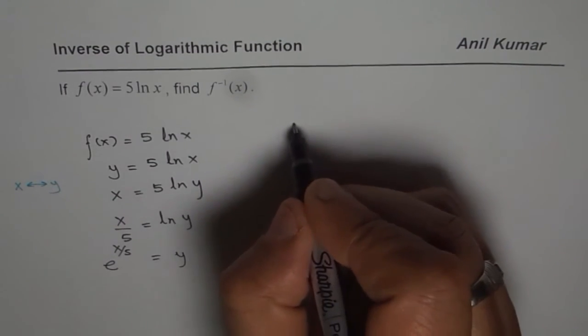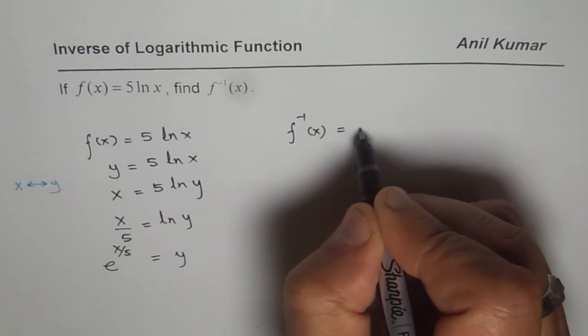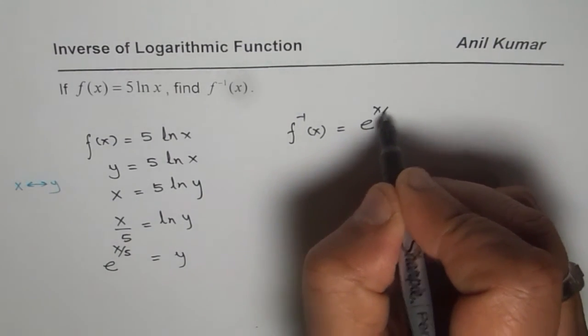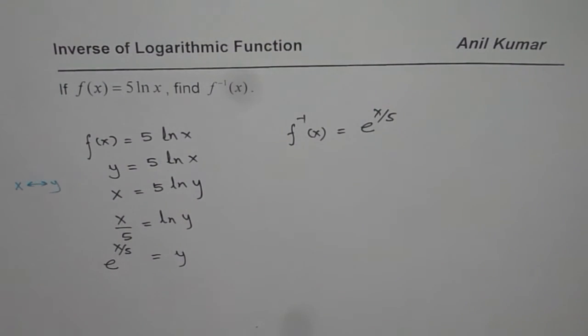And therefore we get our result: f inverse of x is equal to e to the power of x over 5. Thank you.